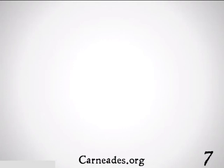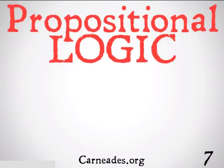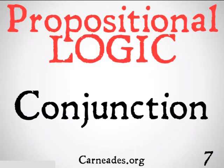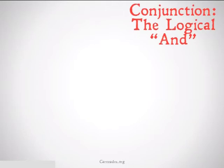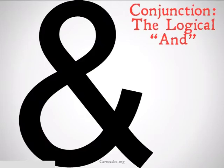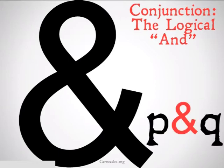Welcome back to 100 Days of Logic with Carneades.org and 92nd Philosophy. Today we're going to be continuing with our series on propositional logic and operations, with the operation of conjunction. Conjunction is the logical 'and,' and we're going to represent it with a big ol' ampersand. So if you want to say P and Q, you would write P ampersand Q.